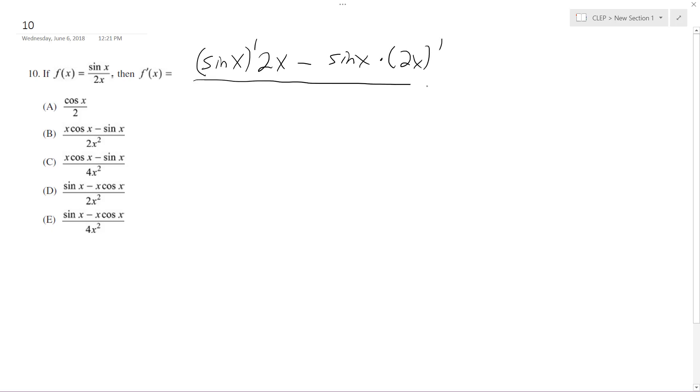all over 2x squared. And what we get is 2x - the derivative of sine of x is cosine x - minus 2 sine of x, all over 4x squared.